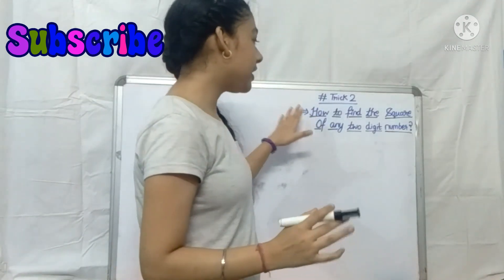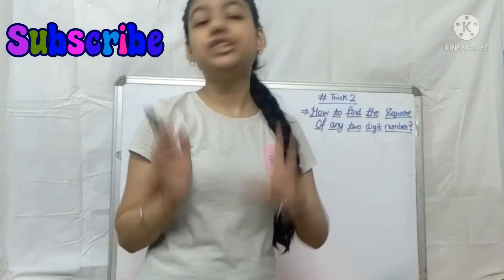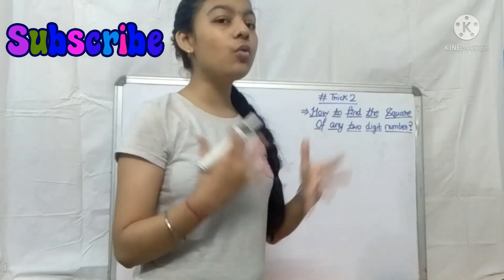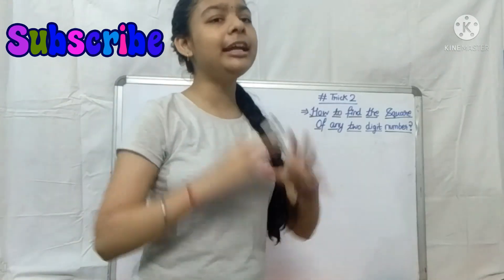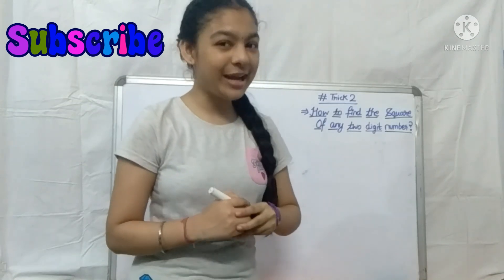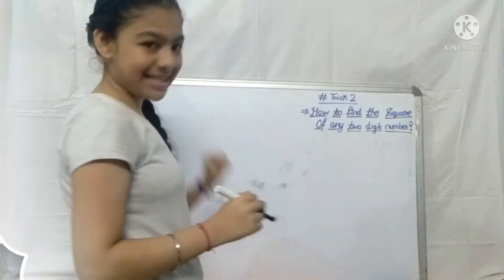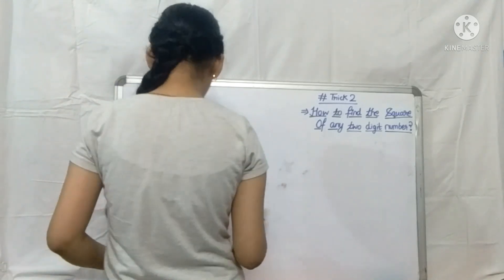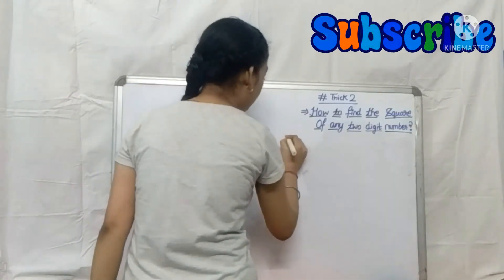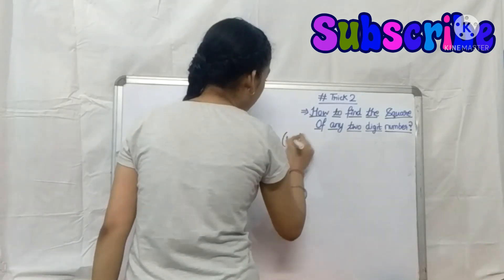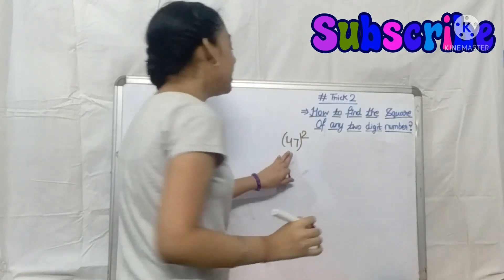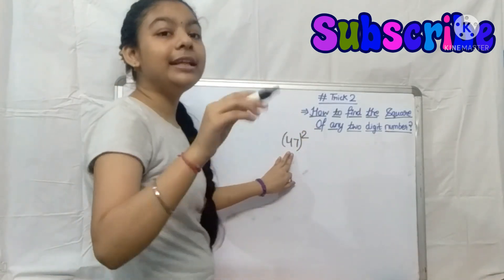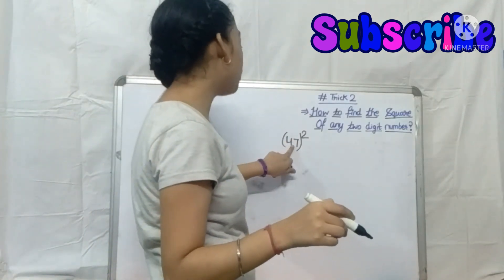Our second trick is: how to find the square of any 2-digit number. So today we are going to find the square of any 2-digit number very easily in a few simple steps. So let's get to our first example. We will take the 2-digit number 47. So we have to find the square of 47, which is basically 47 into 47.